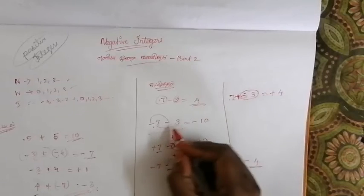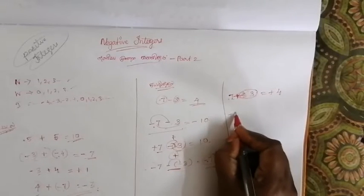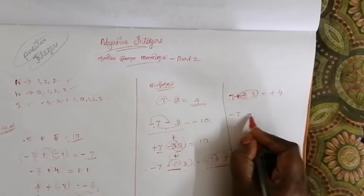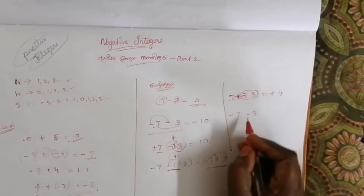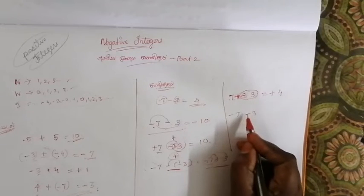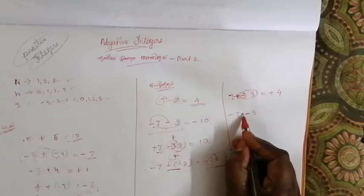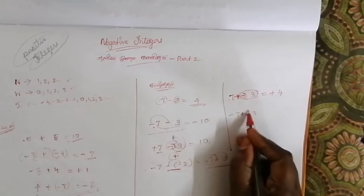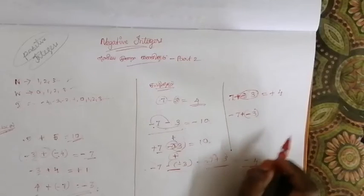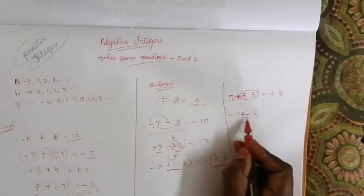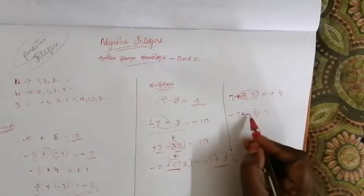Now it's minus 7, which means minus plus 3. We're going to add minus 3. Now we want to take the 2 double-4, minus 8, minus 3.